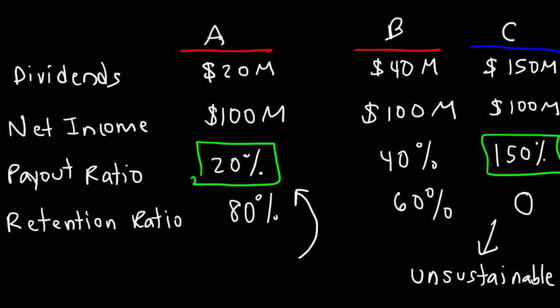A low payout ratio also indicates that a company is retaining earnings, maybe to pay off debt, or to grow its operations and expand its business, which is also a good thing.